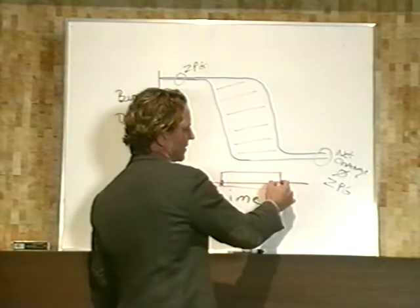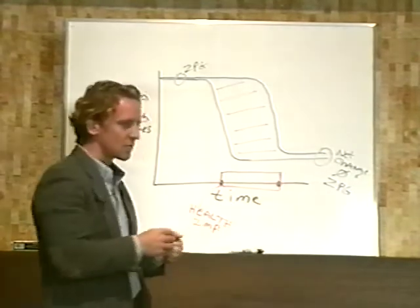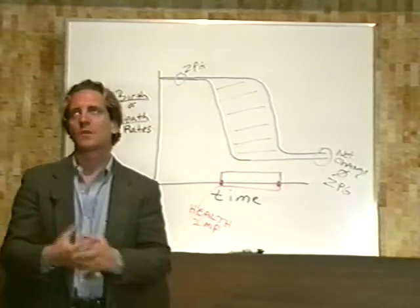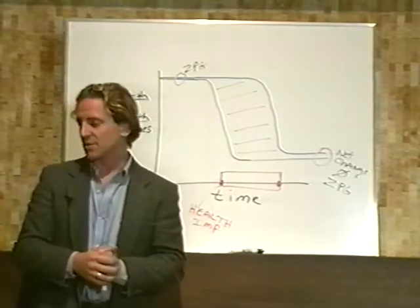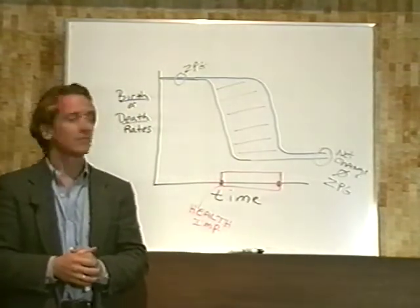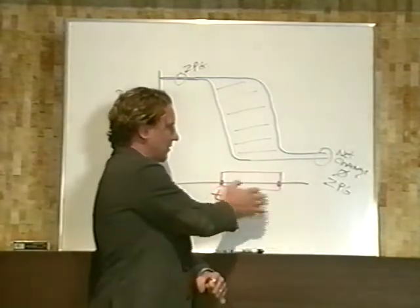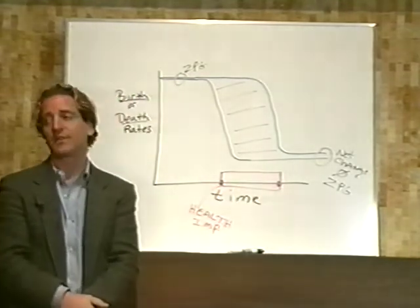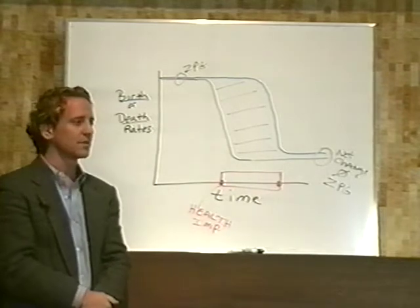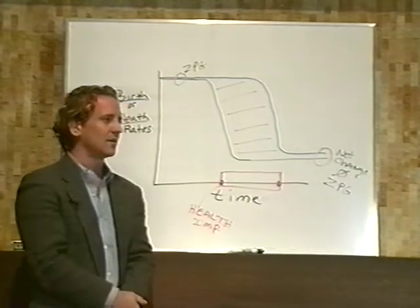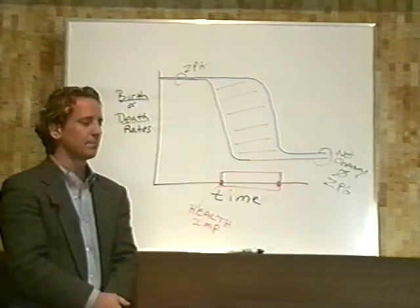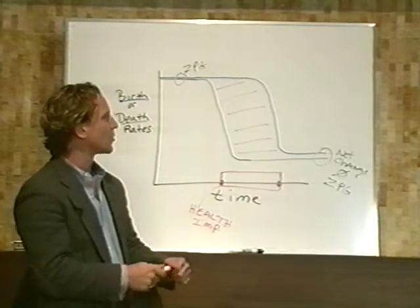Down here, at this red dot, all these social mechanisms are in place. From here to here, these social mechanisms are developing. And many of them do not develop until well after the death rate begins to decline. And that's when you get the net growth.